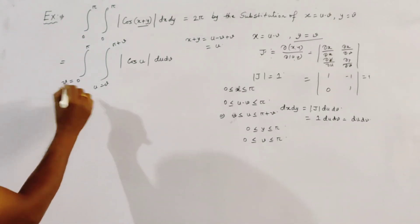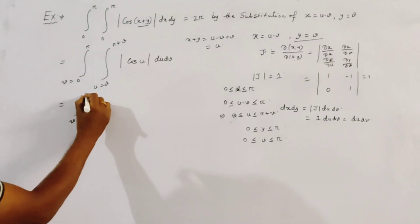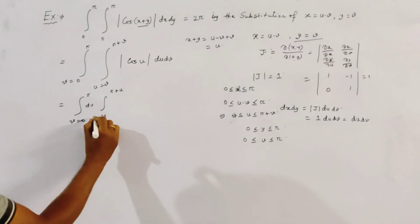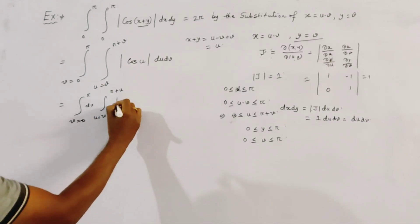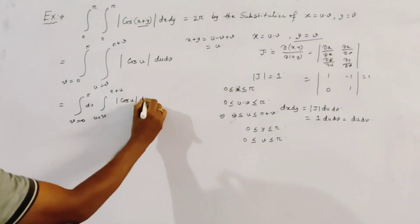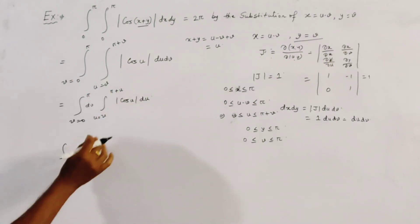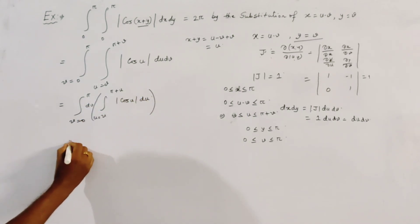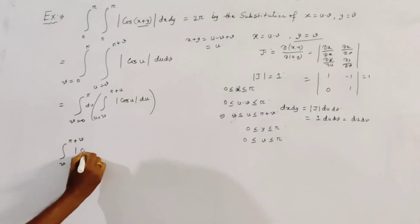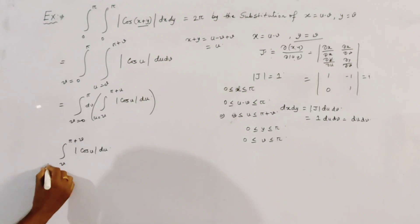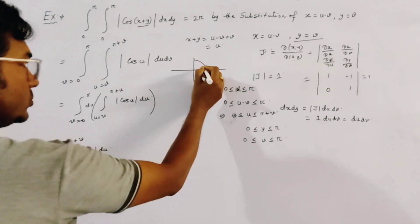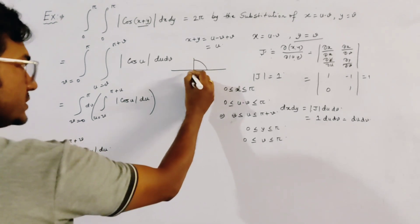Now we write this integration as: v = 0 to π (dv) of the inner integral from u = v to π + v of |cos u| du. We calculate this inner integration first. We know that the cosine curve has sign changes at π/2, so we split the range accordingly.